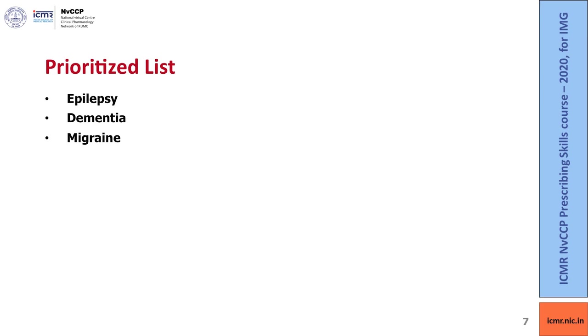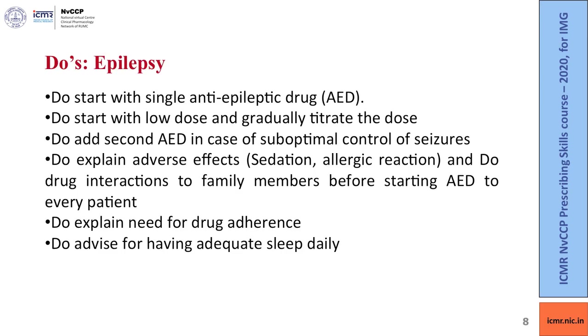These three topics cover important aspects of life: migraine mainly seen in young adults, dementia mainly seen in the elderly population, and epilepsy seen in all age groups.